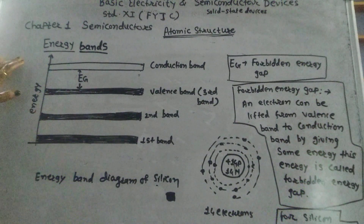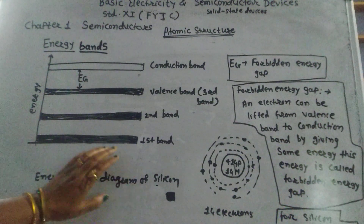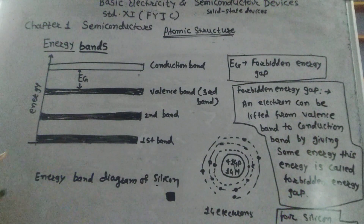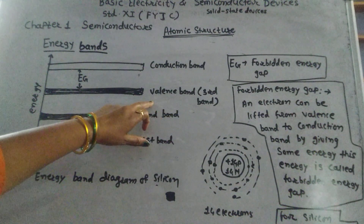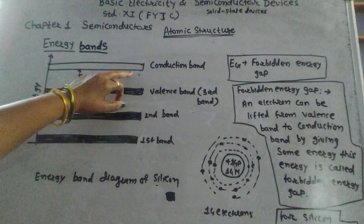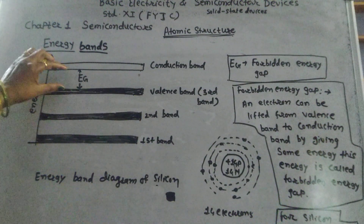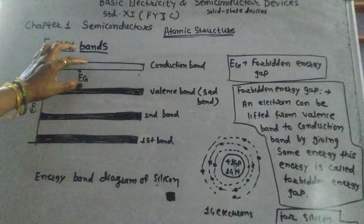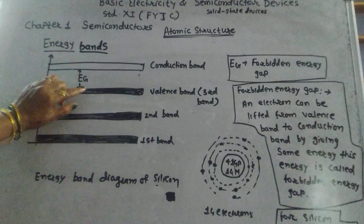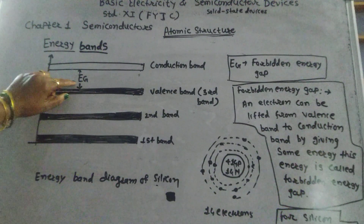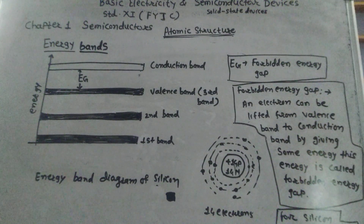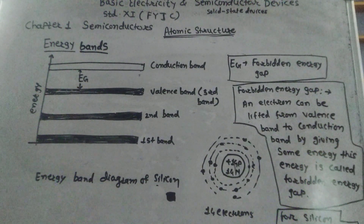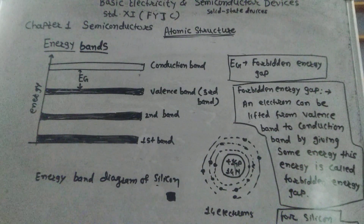Semiconductors and energy bands. This is the energy band diagram of silicon. The first band, second band, and third band is the valence band, and after that the conduction band. There is an energy gap between the conduction band and the valence band that is called EG — the forbidden energy gap. For silicon, EG is 1.12 electron volt, and for germanium it is 0.7 electron volt.